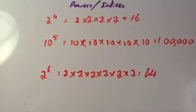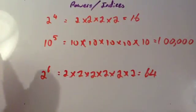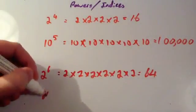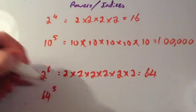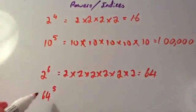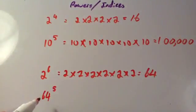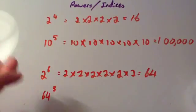Sometimes you have to work these out using a calculator because it would take too much time otherwise. For instance, something like 64 to the power of 5 — you wouldn't want to work that out by hand because you'd have to do 64 times 64 using the grid method times 64, and that would take a long time. So using the calculator is beneficial.